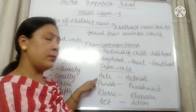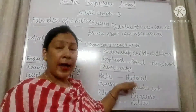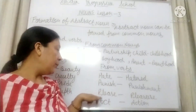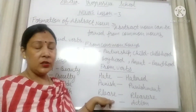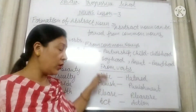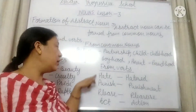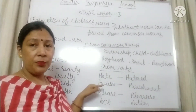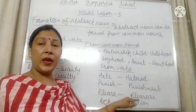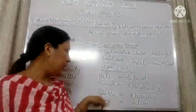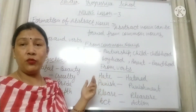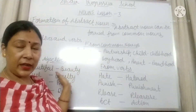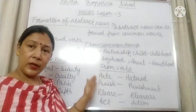So this way we can form abstract nouns from common nouns, adjectives and verbs. Hate is a verb — by hate it became hatred. Punish is a verb — it became punishment. Please is a verb — it became pleasure. Act is a verb — it became action. This is the formation of abstract noun from common noun, from adjectives and from verbs.